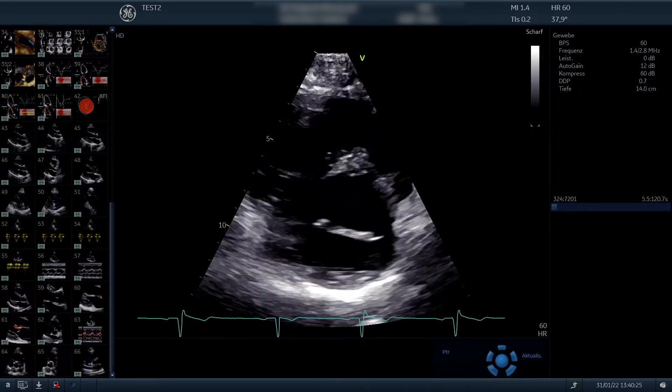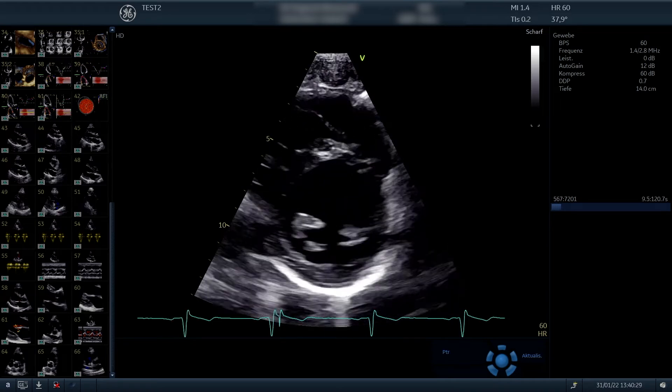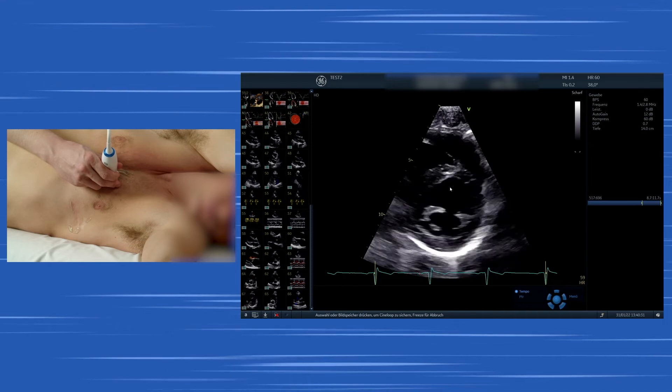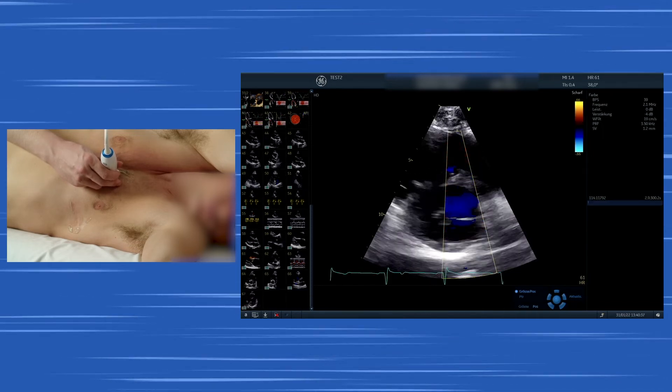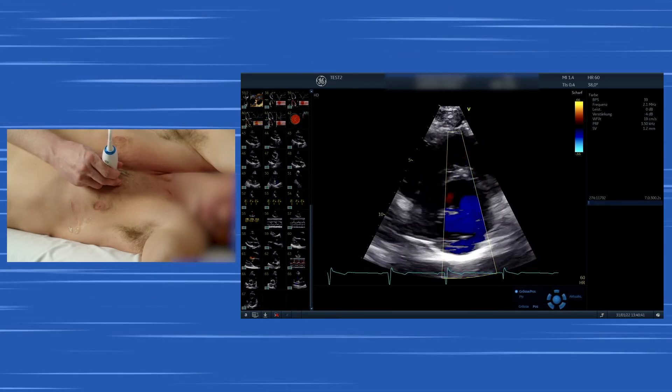Going downwards or tilting downwards, you see that the image changes. And what you see is the parasternal short axis view on the level of the mitral valve. You can also add color Doppler, and you will see that there is no real regurgitation present across the mitral valve.